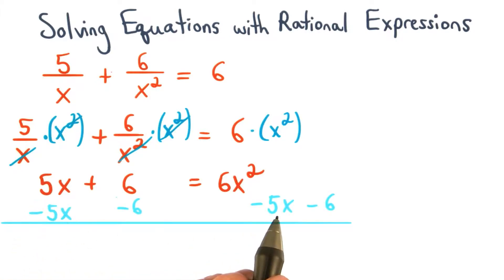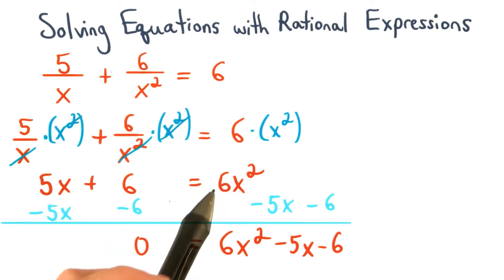I'm going to subtract 5x from both sides and 6 from both sides. I'm performing the same operation on both sides and just showing these two steps at once. This leaves me with 0 on the left and 6x² - 5x - 6 on the right. I also want to subtract on both sides here since I want the x² term to have a positive coefficient. It's generally easiest to factor when this term is positive.